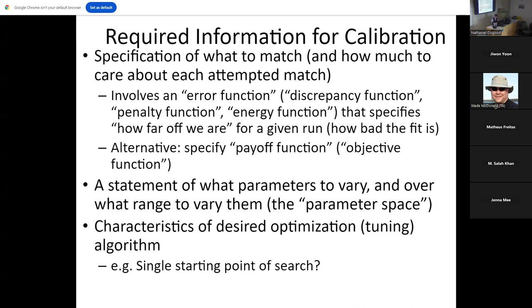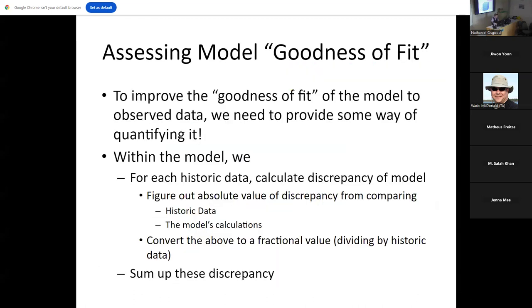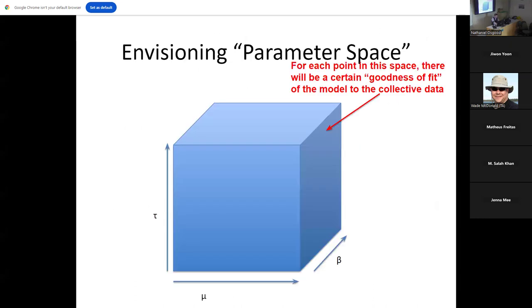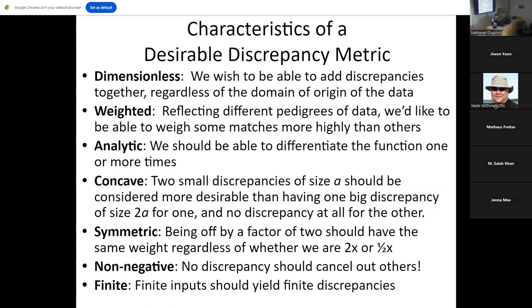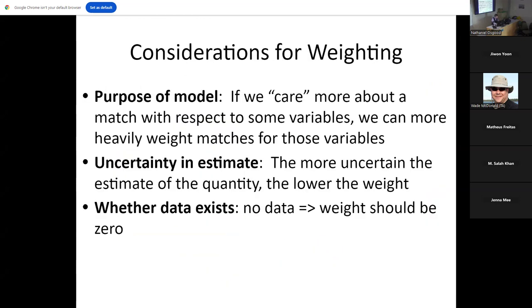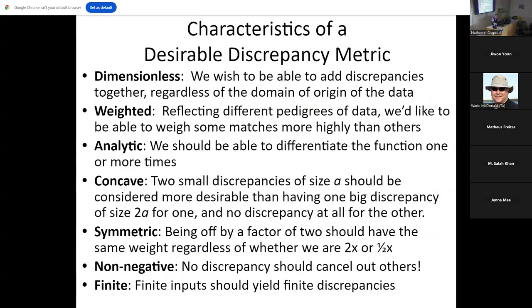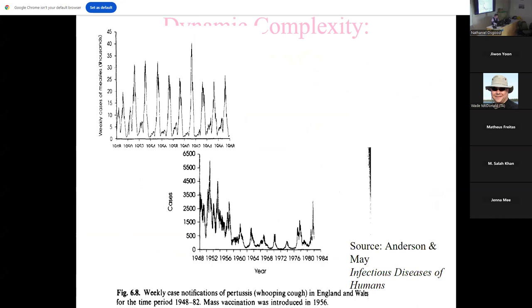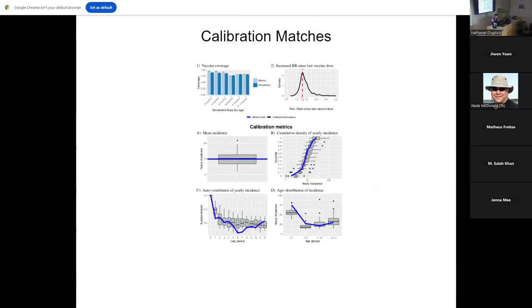This requires a bunch of information: what parameters you want to vary over what range, how you want to do the optimization, and what things you're going to match against empirical data. You have to figure out what outputs from the model get matched to what empirical data, and you're going to have to have some way of quantifying how good is the fit of the model. How good is that match? A discrepancy function. There are arguments for designing these discrepancy functions in principled ways that meet some criteria.